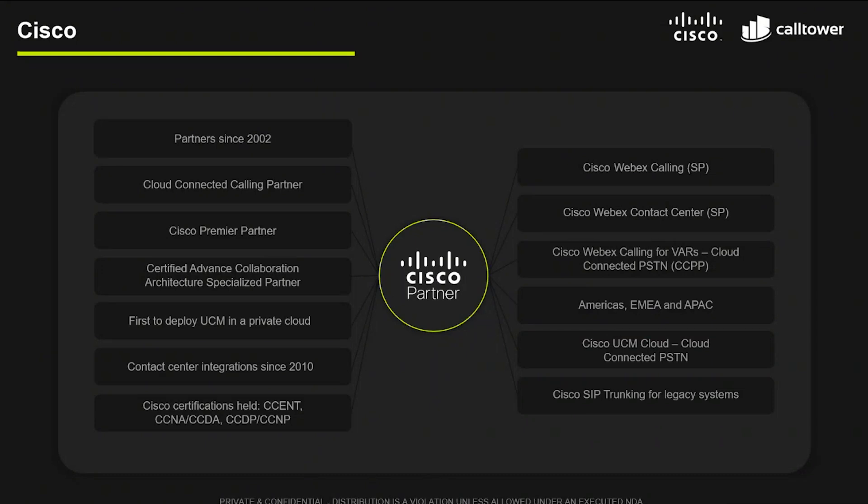Cisco created Call Manager back in the day for organizations that wanted to leverage a line-key phone system. As the industry started taking off and more organizations adopted unified communication solutions, Cisco gave companies different options to enable calling in various ways. One option was having Call Manager on your premise; another was going to a third-party hosting provider like Calltower, where we started in 2002, hosting different versions of Call Manager from the early 3.x days all the way up to version 14.x. Then Cisco created WebEx Calling to replace the Call Manager and HCS backbone — both the hosted and premise-based environments.